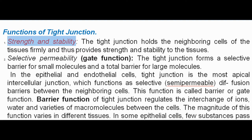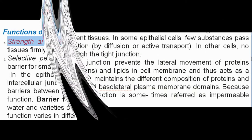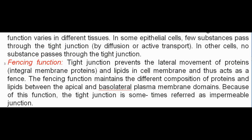The barrier function of the tight junction regulates the interchange of ions, water, and varieties of macromolecules between the cells. The magnitude of this function varies in different tissues. In some epithelial cells, a few substances pass through the tight junction by diffusion or active transport. In other cells, no substance passes through the tight junction.